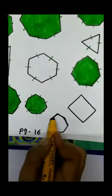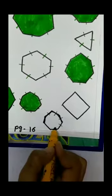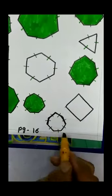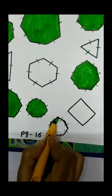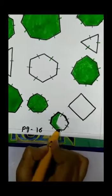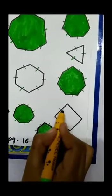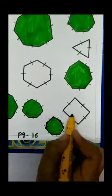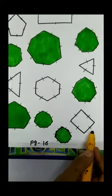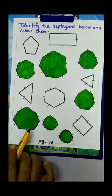Now we will count the sides of the next image — 1, 2, 3, 4, 5, 6, and 7. It means which shape is this? Yes, this is also a heptagon, so we will color this one. Now only one shape is left, so we will count the sides — 1, 2, 3, 4. It means it is a square because it has four sides, so we will not color it. This way we have identified all the heptagon shapes and colored them. Thank you.